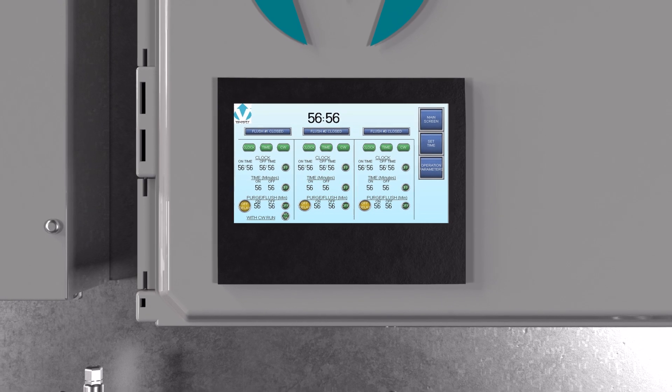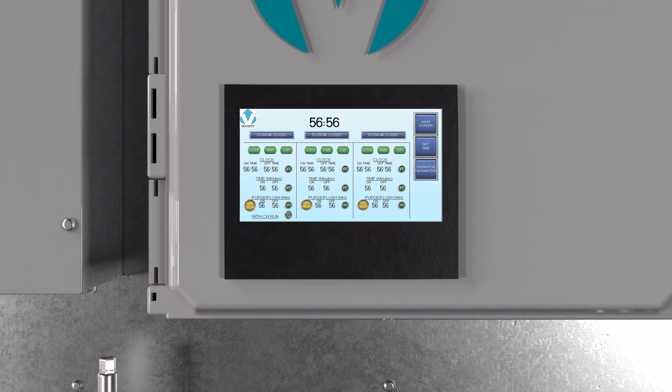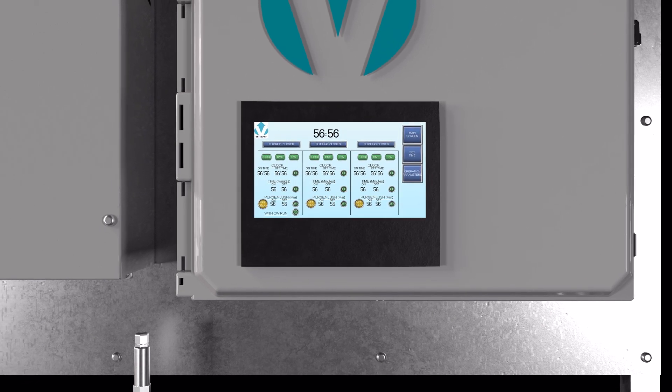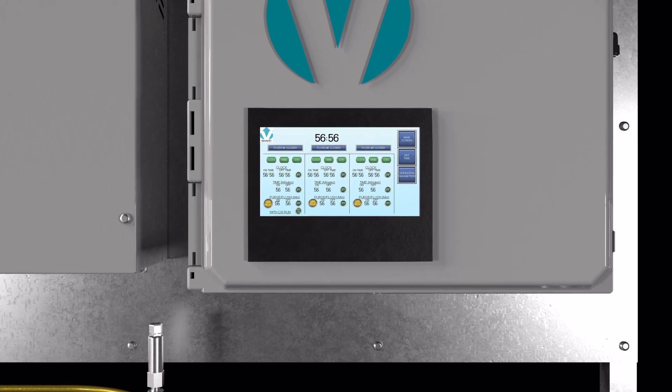You can also program three different flush cycles. Each can be programmed to use a real-time clock, run as a repeat cycle timer, or run off the conveyor run cycle.